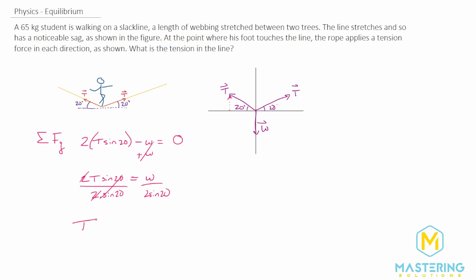So T equals the weight, which we can substitute as mg, divided by 2 sine of 20.